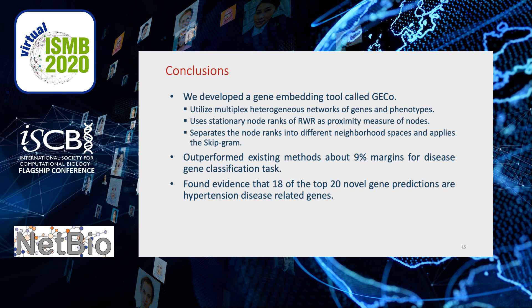In this study, we developed a gene embedding tool called Gecko that can utilize multiplex heterogeneous networks of genes and phenotypes. It uses stationary node ranks of random walk as a proximity measure of nodes, separates the node ranks into different neighborhood spaces, and then applies the skip-gram algorithm to generate node embeddings. It consistently outperformed existing methods for disease gene classification tasks, and the evidence found for 18 out of the top 20 novel gene predictions shows the power and utility of Gecko's performance.